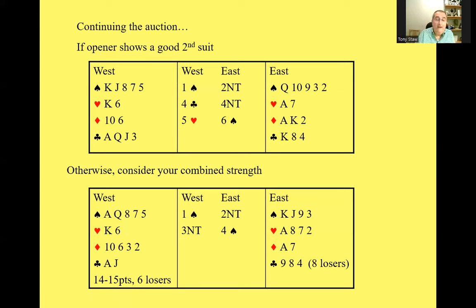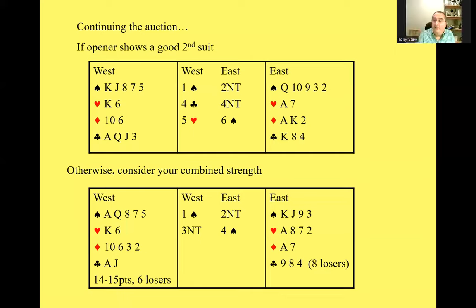A question came up again: does three no trump have anything to do with having a balanced hand? No — the three no trump is a completely artificial meaning saying it's typically a six loser hand. Whatever you do, don't think of passing three no trump — because you're headed for four spades.